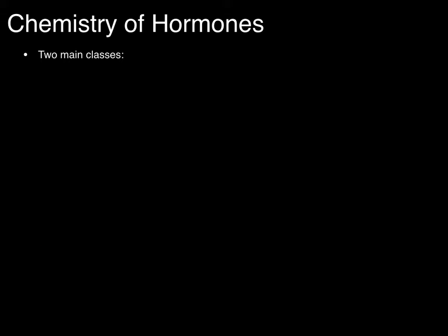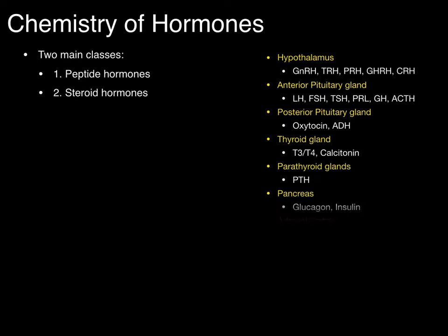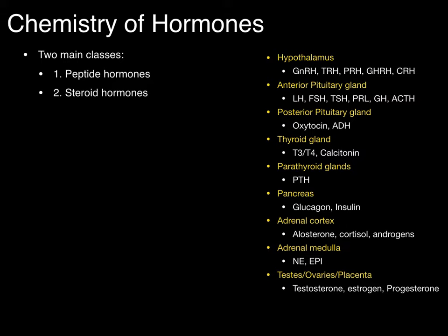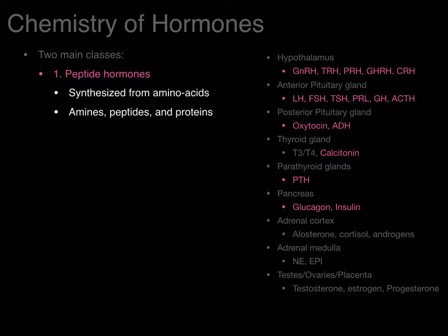Now the chemistry of hormones. There are two main classes of hormones in the endocrine system: peptide hormones and steroid hormones. On the right-hand side in yellow are the major endocrine glands in the body, with the major hormones secreted by each listed below. Peptide hormones are synthesized from amino acids, amines, peptides, and proteins. All the hormones shown in pink are considered peptide hormones.